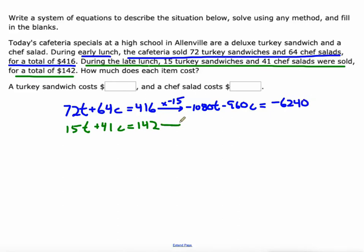All right. It'll come clear here in a second why I did that because I'm going to multiply the bottom equation here by 72. That's going to give me 15T times 72 is 1080T. That was the key part there that I got opposites for those values. 41 times 72 is 2952C. And 142 times 72 is 10,224. All right. So now we'll add these two equations together. The T terms cancel out. Negative 960 plus 2952 is 1992C. And negative 6,240 plus 10,225 is 3,985.